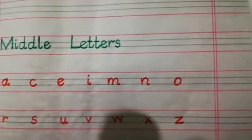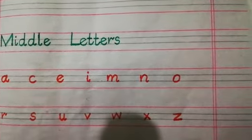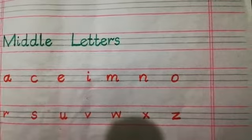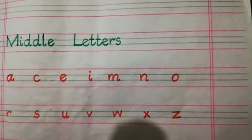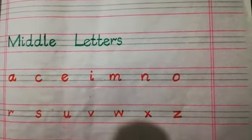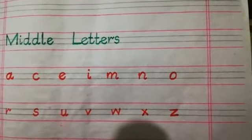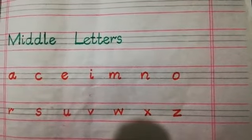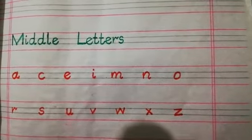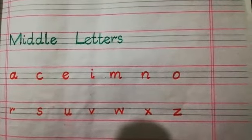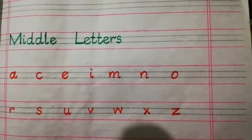Letter A, C, E, I, M, N, O, R, S, U, V, W, X, and Z. There are fourteen letters. They are called middle letters.